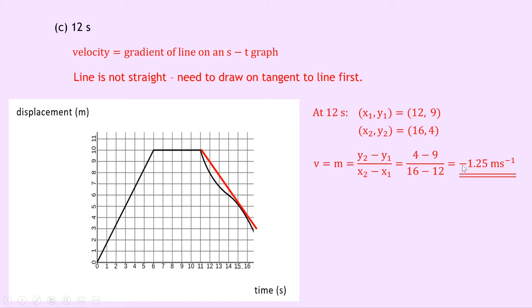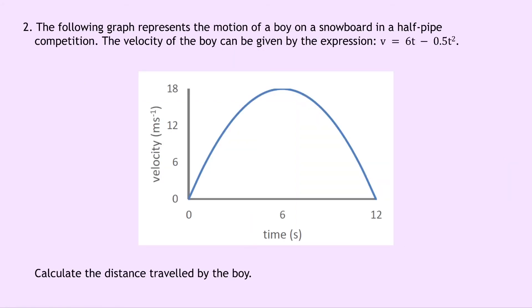Question 2 says that the following graph represents the motion of a boy on a snowboard in a half-pipe competition. The velocity of the boy can be given by the expression v equals 6t minus 0.5t squared. You'll notice we've got velocity in meters per second against time in seconds, and we've got a curved shape, no straight lines there. So it says to calculate the distance travelled by the boy. Well, first of all, we need to remember that the distance or displacement is given by the area under a velocity time graph. And in this case, we need to integrate since the shape is a curve.